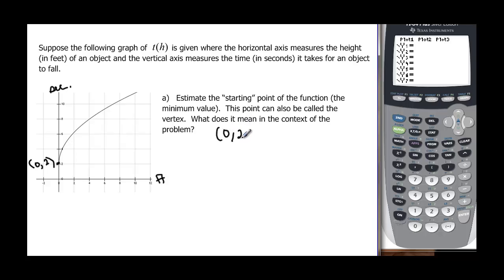So what does that mean in context of the problem? Well, remember we have an object that's falling, and this is the height that it falls, and this is the time it takes for the object to fall. So it sounds like we are saying that we have an object that falls zero feet in two seconds.